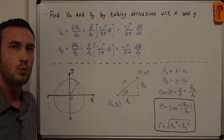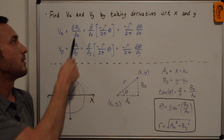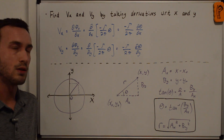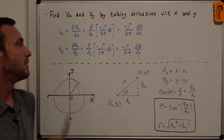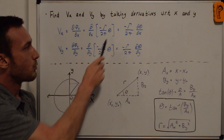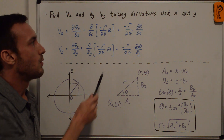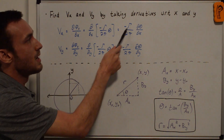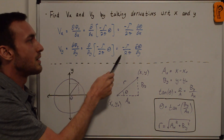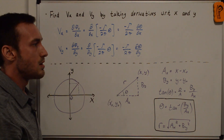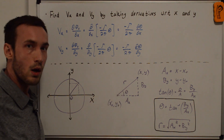In order to find the x and y components of velocity, we take the partial derivative of the velocity potential with respect to x and y. So vx is d(phi_v)/dx, and vy is d(phi_v)/dy. Plugging in from the previous whiteboard for the velocity potential, we get vx equals negative gamma over 2 pi times d(theta)/dx, and vy equals negative gamma over 2 pi times d(theta)/dy. The next step is to figure out what d(theta)/dx and d(theta)/dy are.